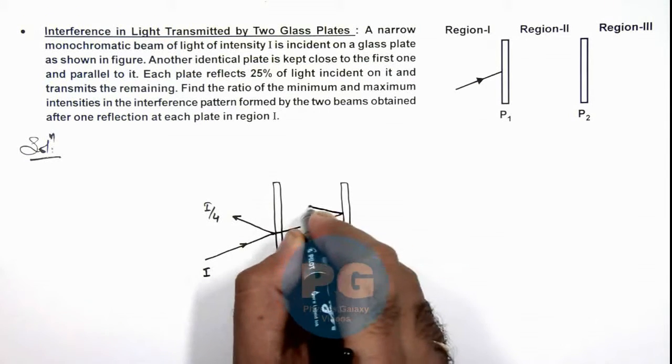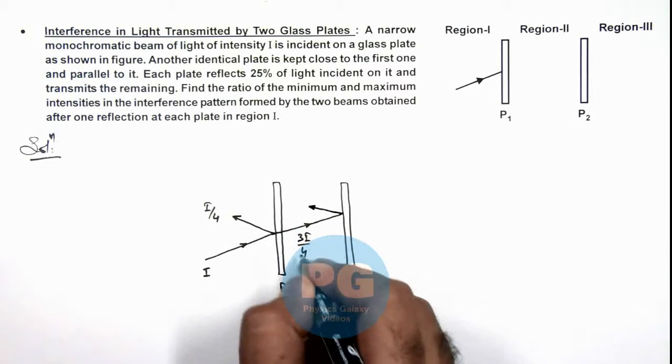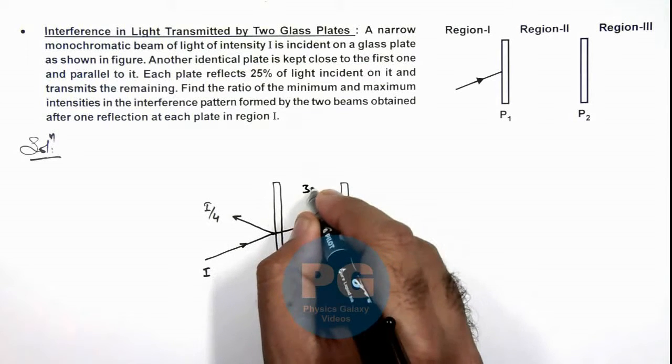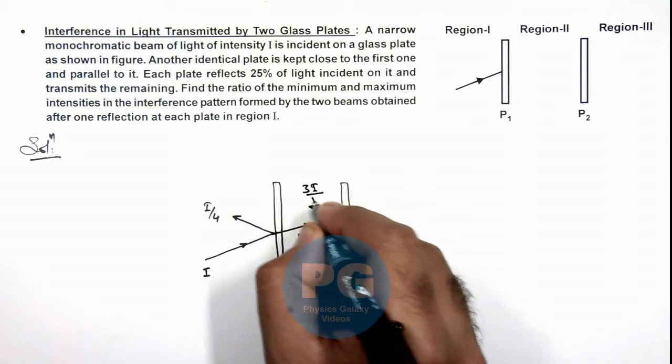Again, it reflects 25 percent of light, that is one fourth of this. We can write its intensity to be 3I/16.